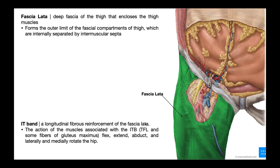As we saw in one of the glute videos, the gluteus maximus actually has part of its insertion on the fascia lata, which means when it contracts it's going to be able to tense or pull on the fascia lata. However, there's a second muscle — the topic of this video — the tensor fascia lata, which has its sole insertion on the IT band. So like the gluteus maximus, when the tensor fascia lata contracts it's going to tense on the fascia lata, and therefore it gets the name tensor fascia lata because it pulls on it.